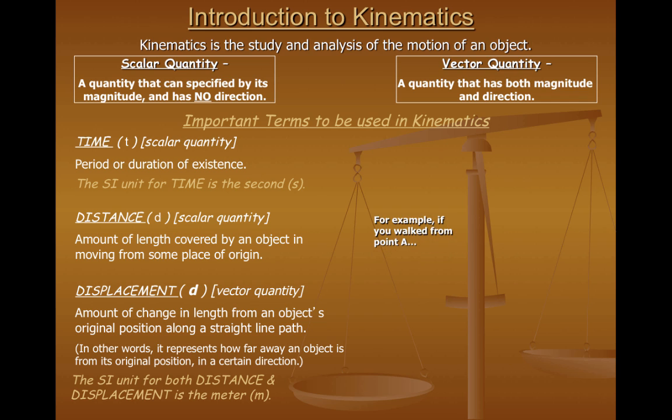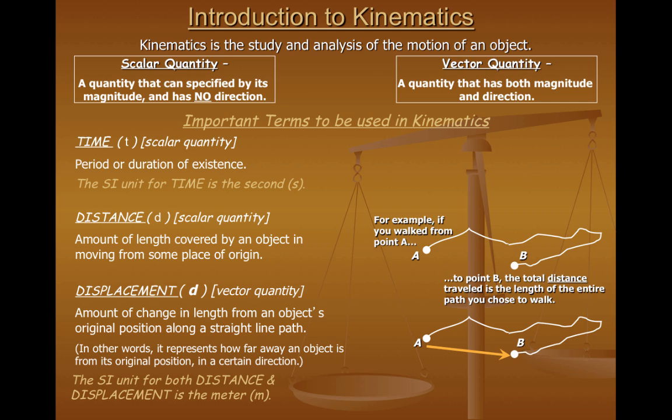Now, to give you an example of the difference between distance and displacement, let's say you walked along this path from point A to point B. The total distance traveled would be the amount of length covered in walking the entire path from point A to point B. Now, different from distance travel would be the displacement. In this case, the displacement would be the straight line distance from point A to point B. And you'll notice if you started at point A and you finish at point B, the arrow that represents the vector of displacement points in a direction that is slightly down and to the right. The length of the arrow would represent the amount of displacement or the magnitude of the object's displacement.